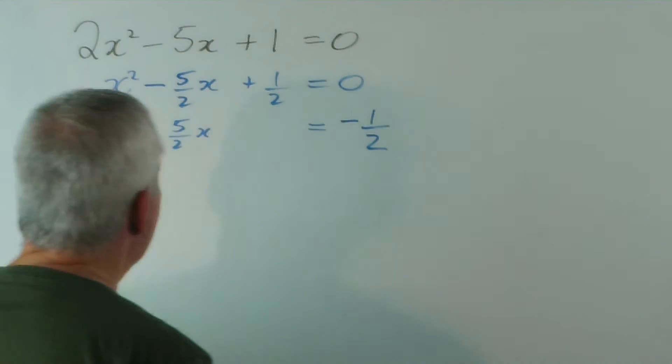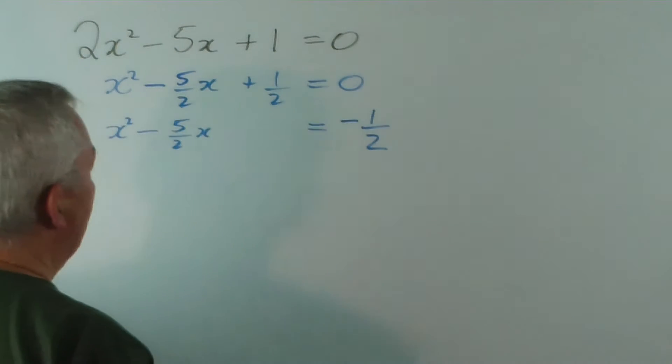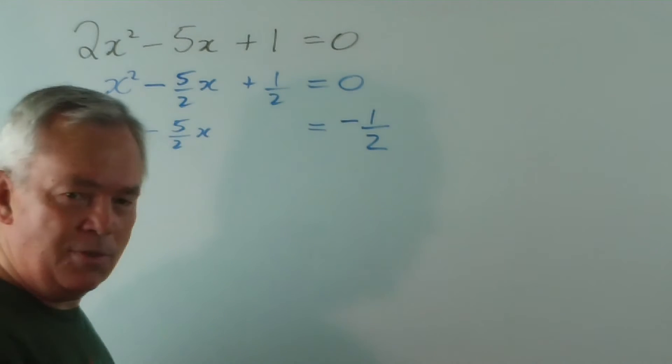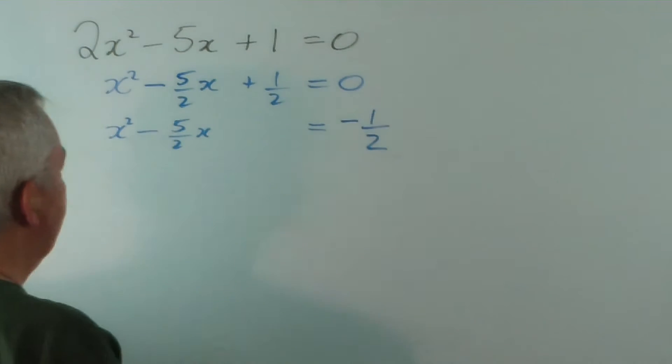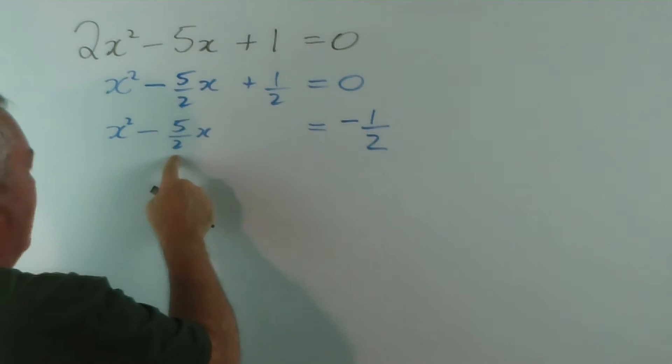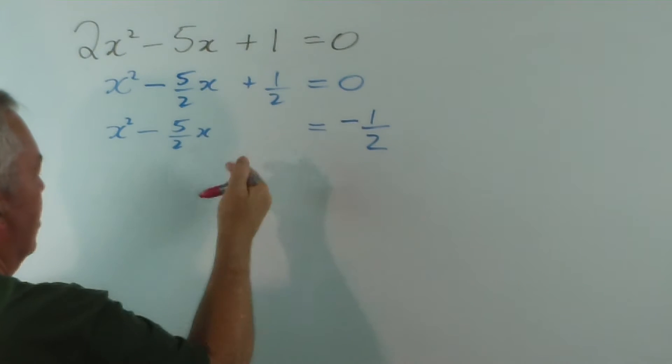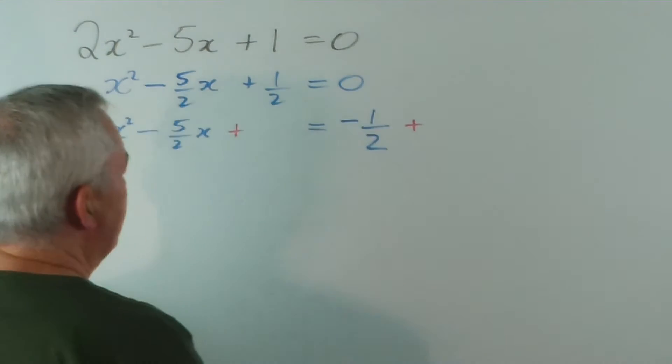And how do we complete the square? Well, again, I like fractions rather than decimals in this context. We find half of this and square it. That's the pattern. Half the coefficient of x and square it. Now, we're going to add that to both sides of the equation.